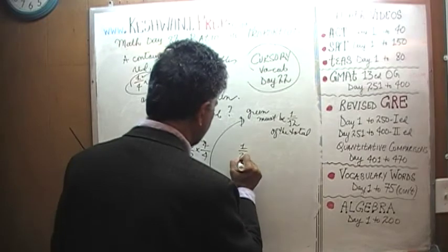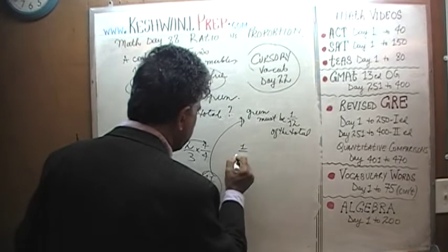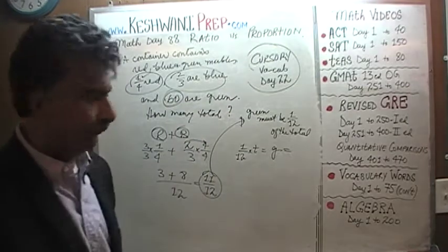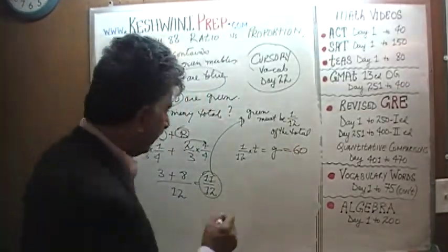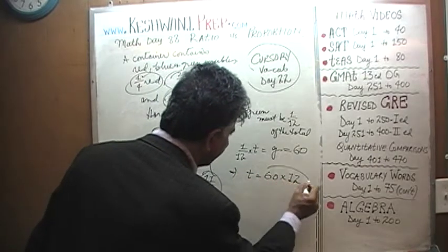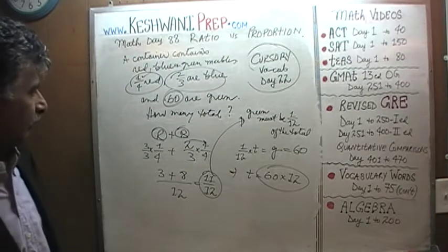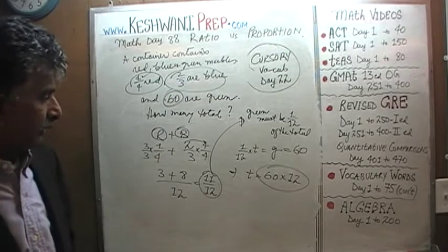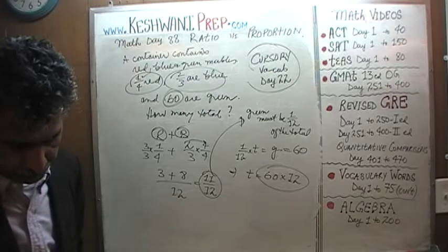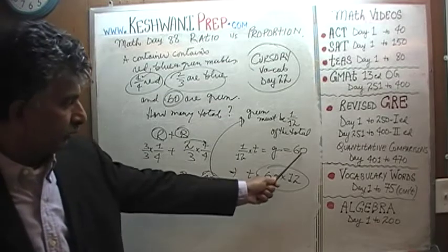So here we go. One-twelfth of the total is green which we are told are sixty. Which implies that the total must be sixty times twelve. Total must be sixty times twelve. That's it. That's your answer. That's what we are looking for. How many totals, that is. Whatever that works out to be. I was about to make a remark here. Yeah, multiply both sides by twelve. So this twelve goes away and then twelve ends up there.